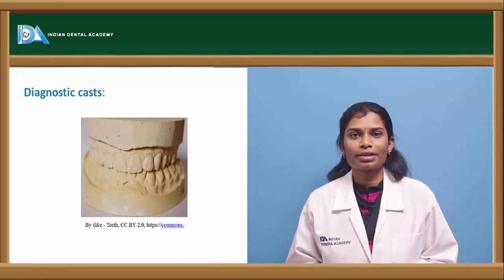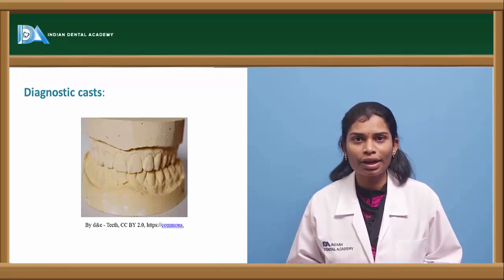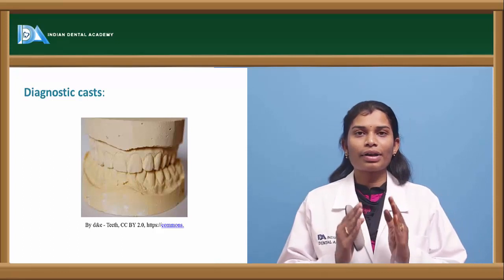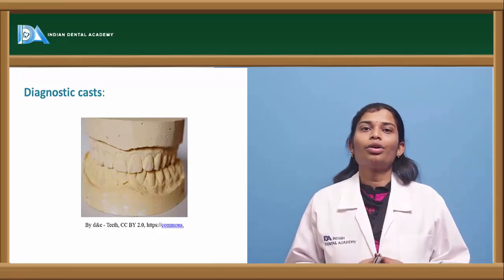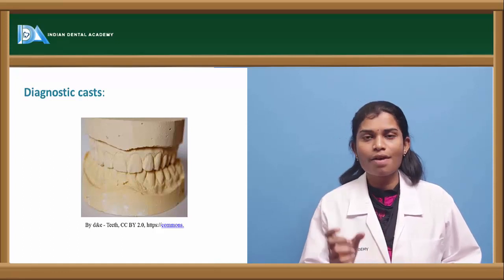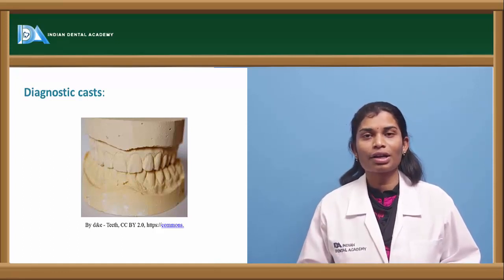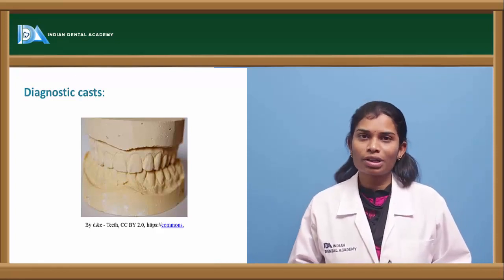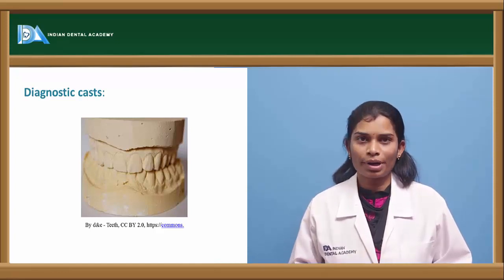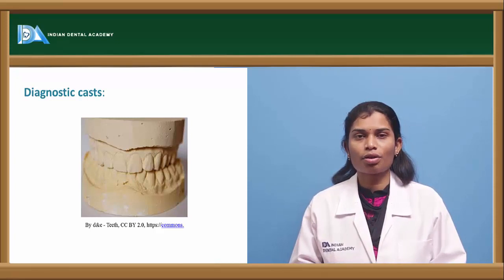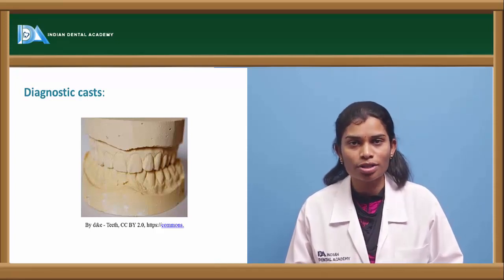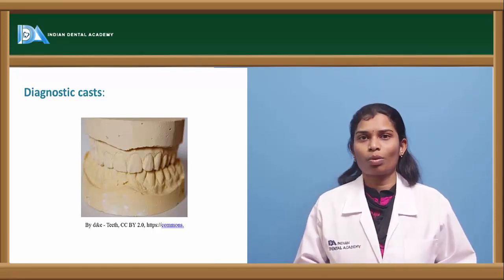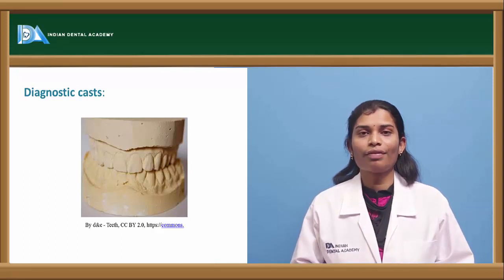On the articulator you can study centric and maximum intercuspation, identify first contact and any deviations, and assess the abutment and edentulous areas — including the occlusogingival height of the abutment, length of the span, configuration of the arch, and type of movements the proposed pontic will undergo. With the diagnostic cast you can also carry out a mock preparation to determine the amount of reduction possible, and assess whether any intentional root canal therapy is required.